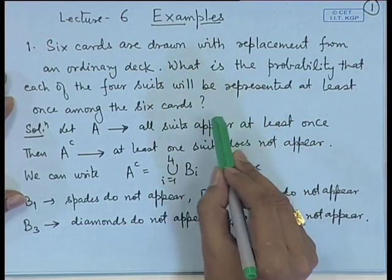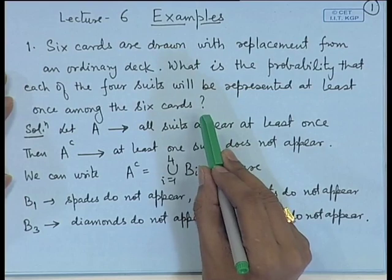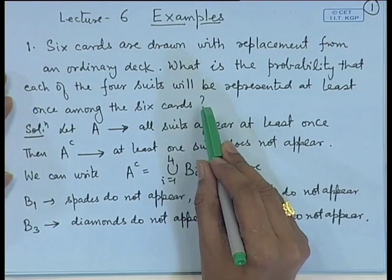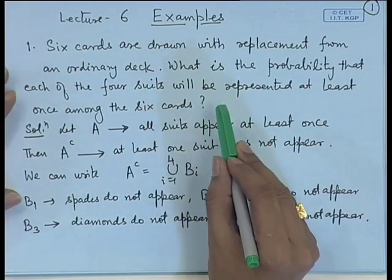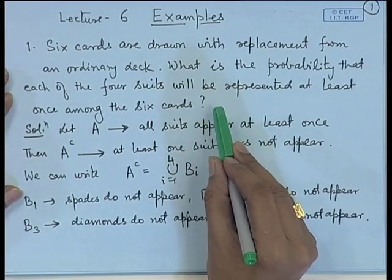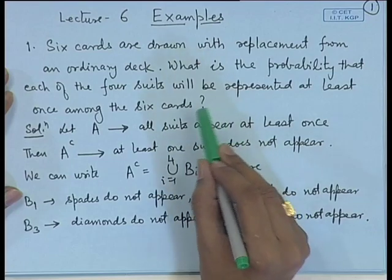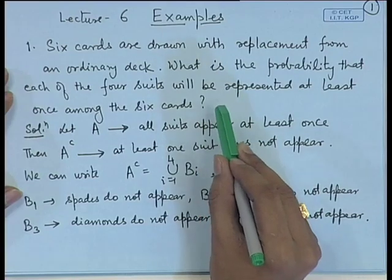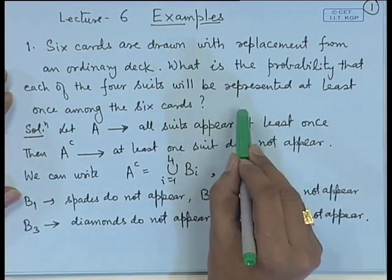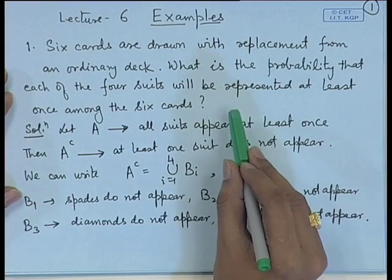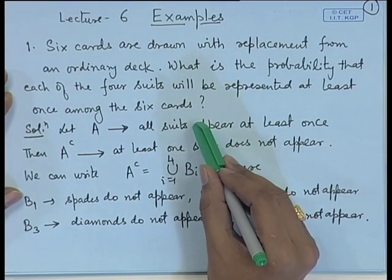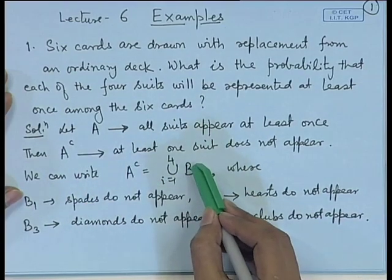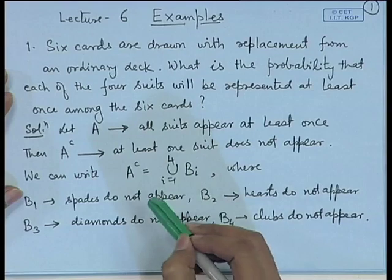If we try to find the probability in a straightforward fashion, the possibilities are too many — for example, there could be 4 spades, 1 card of each other suit, and the remaining 2 cards could be any combination such as spade, heart, both spade, one spade, one diamond, and so on. We will show that using complementation and the union of events, the problem becomes simpler.